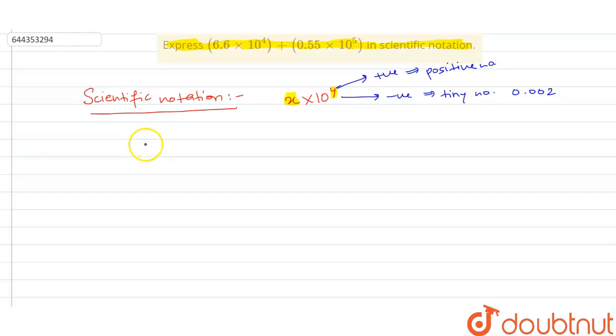So now let's move to the question. We are having 6.6 multiplied by 10 to the power 4 plus 0.55 multiplied by 10 to the power 5. Both individually represent scientific notation.